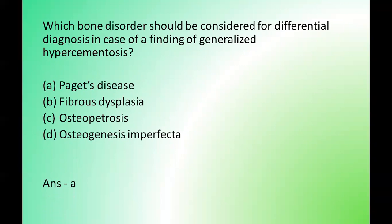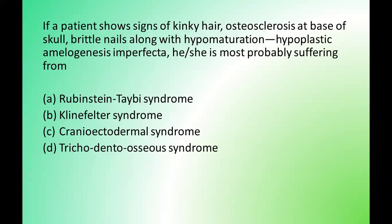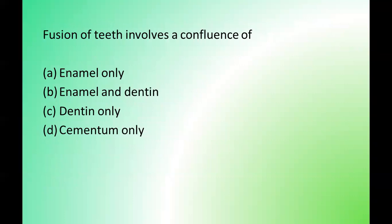Next question: if a patient shows signs of kinky hair, osteosclerosis at the base of skull, brittle nails, along with hypomaturation hypoplastic amelogenesis imperfecta, he or she is most probably suffering from which syndrome? The correct answer is option D — tricho-dento-osseous syndrome. Next question: fusion of teeth involves a confluence of which structures? The correct answer is option B — enamel and dentine.